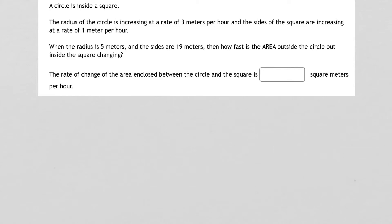A circle is inside a square. The radius of the circle is increasing at a rate of 3 meters per hour, and the sides of the square are increasing at a rate of 1 meter per hour. When the radius is 5 meters and the sides are 19 meters, how fast is the area outside the circle but inside the square changing?